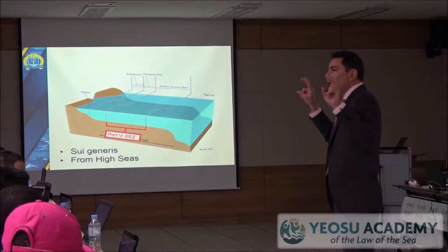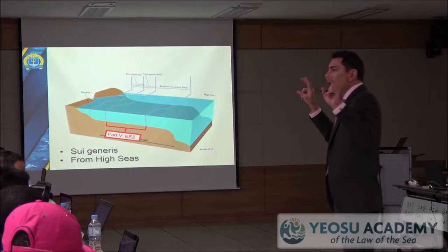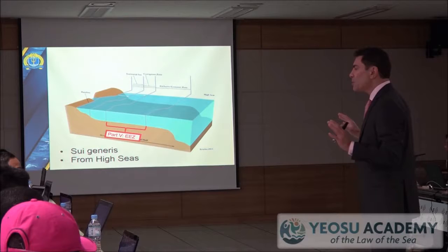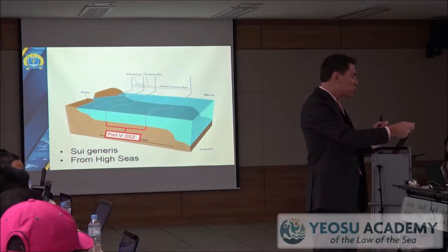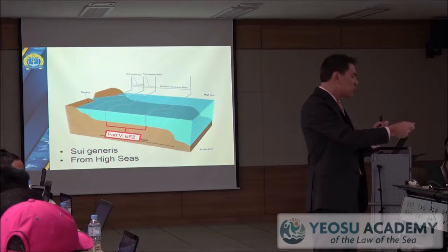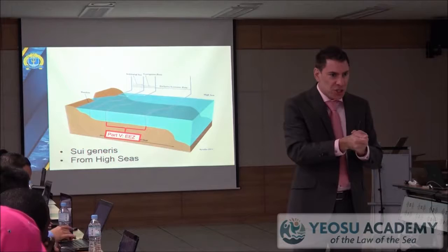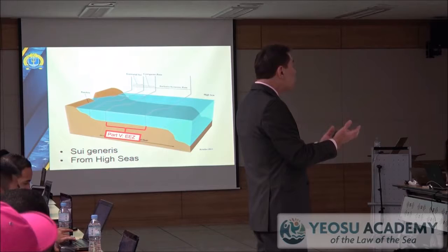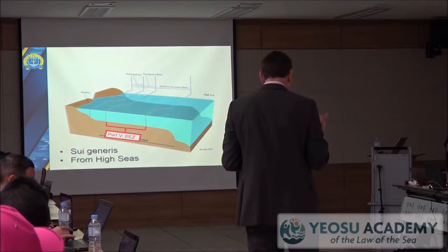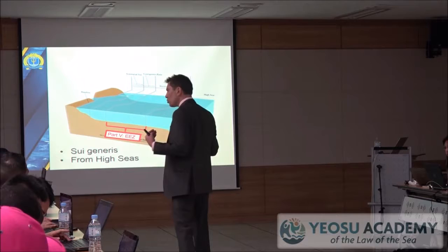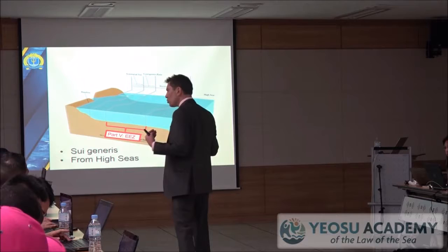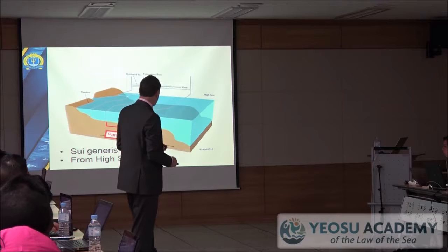It's actually the opposite of national aggrandizement. The EEZ was the global commons — owned by all states — and all states decided that the coastal state would be afforded specific sovereign rights and jurisdiction, but not sovereignty. The balance of interests flowed to the international community. Most international lawyers would agree that the balance of interests favors the international community, even though it's considered a coastal state's EEZ.